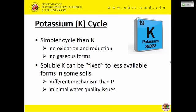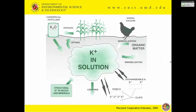Coming to potassium, which is an easier nutrient to manage with a simpler cycle. We don't have the many reactions that happen with nitrogen. A couple of things can happen to soluble potassium: it can be fixed or become less available. There are minimal water quality issues — we never talk about potassium in terms of water quality because it's not a concern.